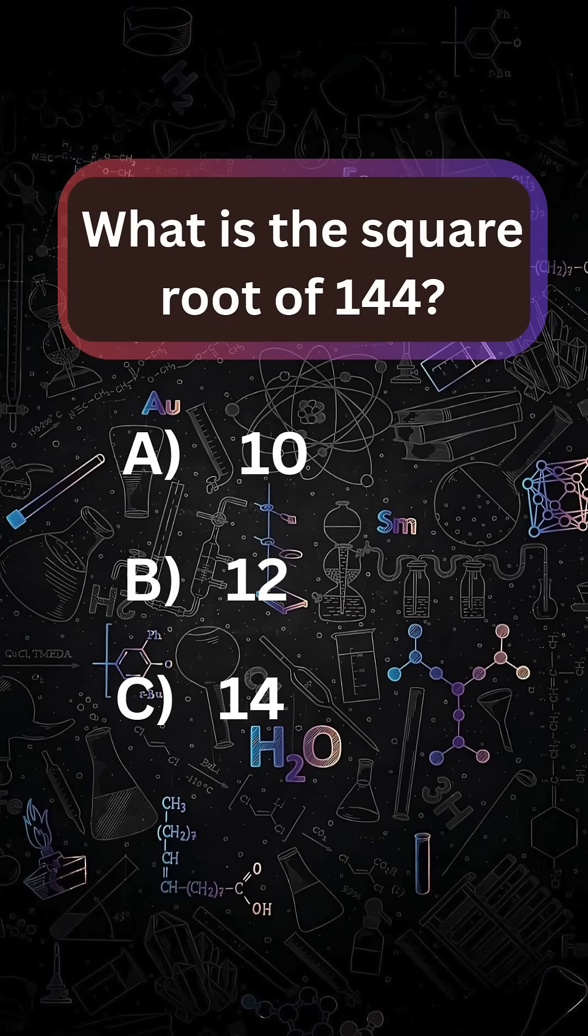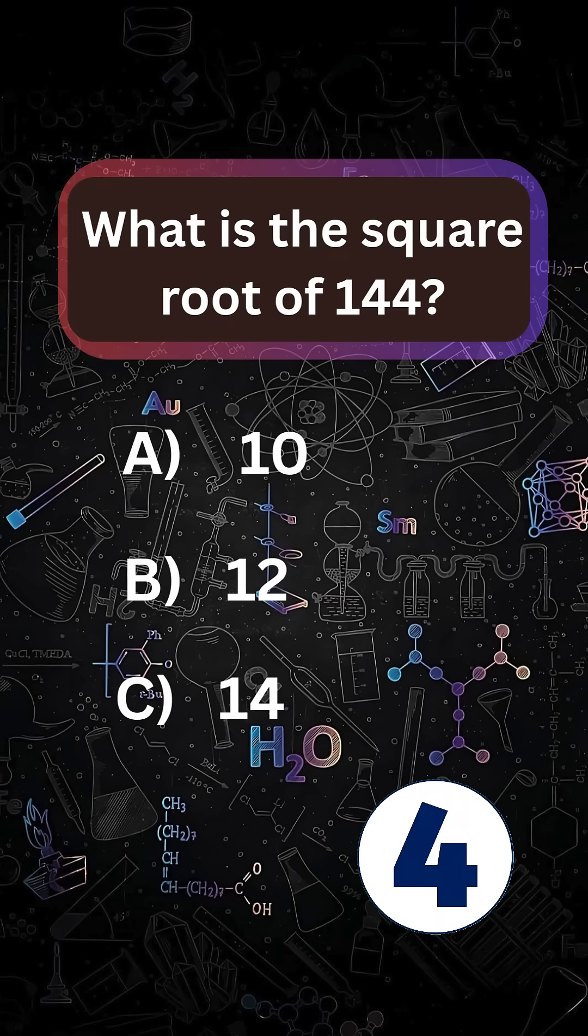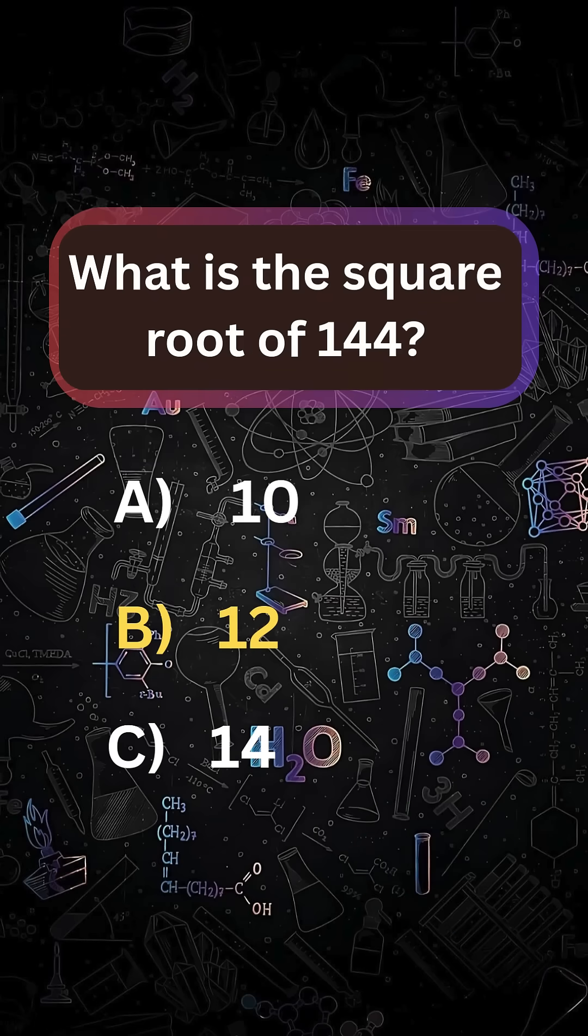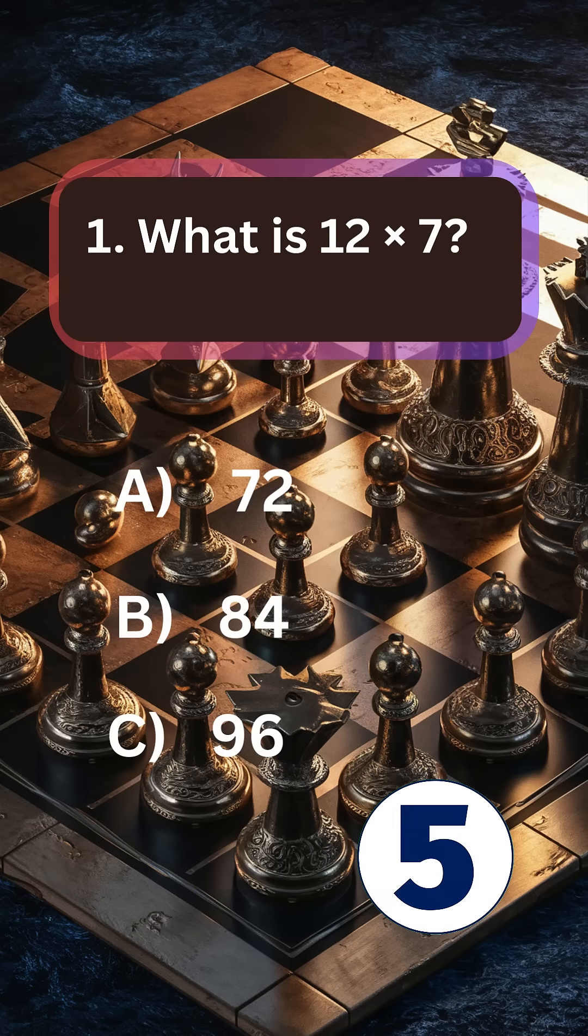What is the square root of 144? Answer: 12. What is 12 times 7? Answer: 84.